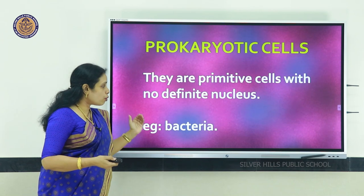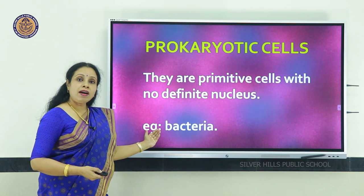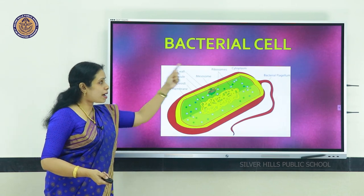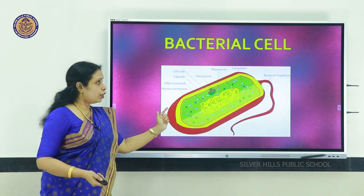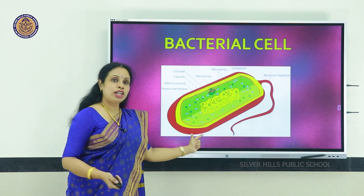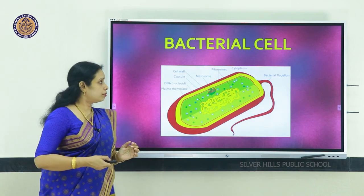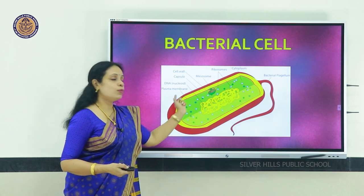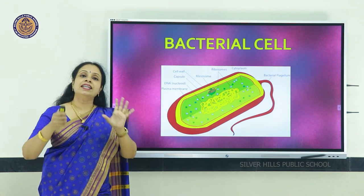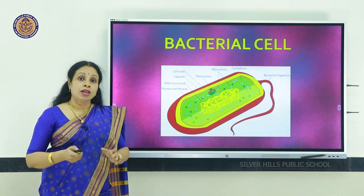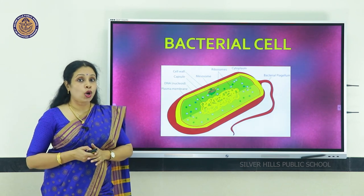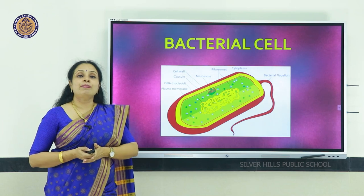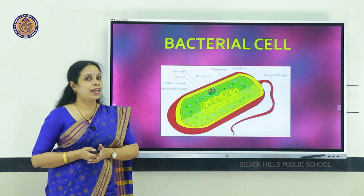An example of prokaryotic cells is bacteria. Here is a bacterial cell — you can see it has a flagellum for moving around, and the chromosomes are lying naked in the cytoplasm. There is no nucleus at all, so a bacterial cell is an example of a prokaryotic cell.